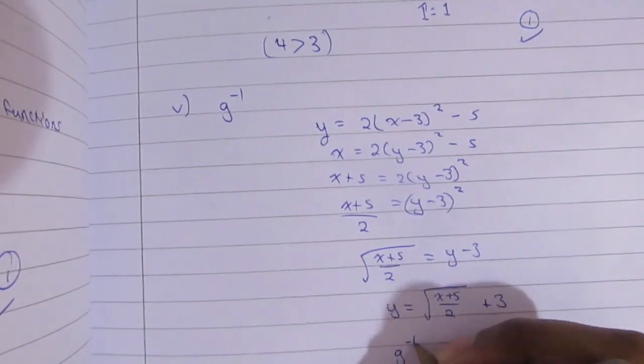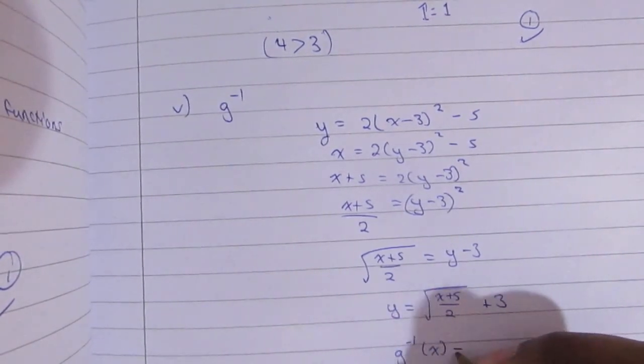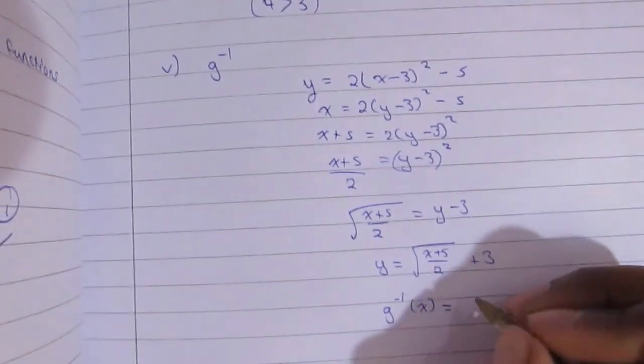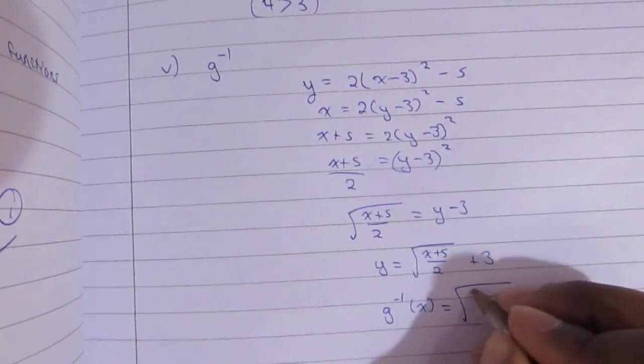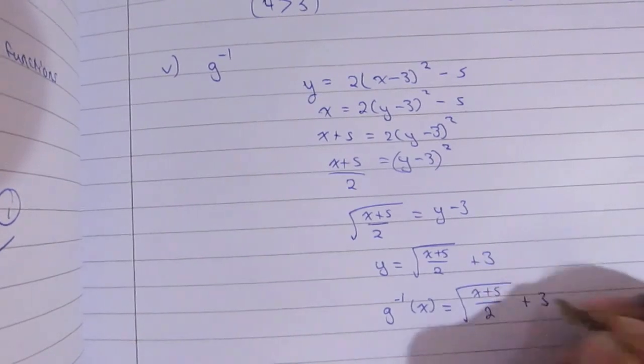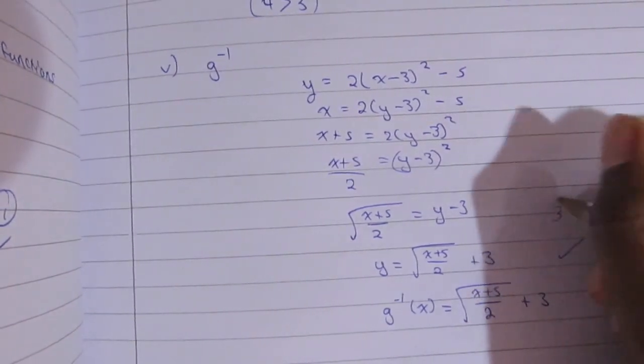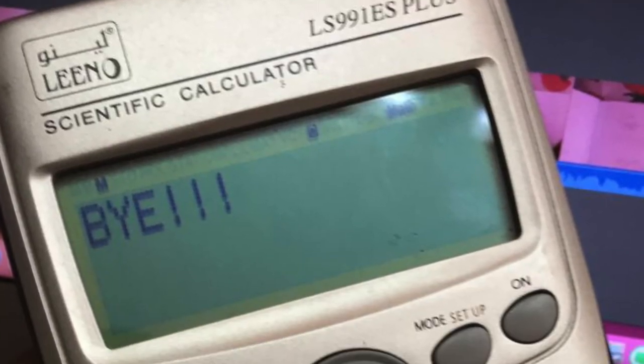Don't mess up the signs. So then that is it for the inverse of g. I'm just going to write it out again, and that is it. That is a total of three marks. Congratulations. We are done with this question. One more question for this paper and we are done.